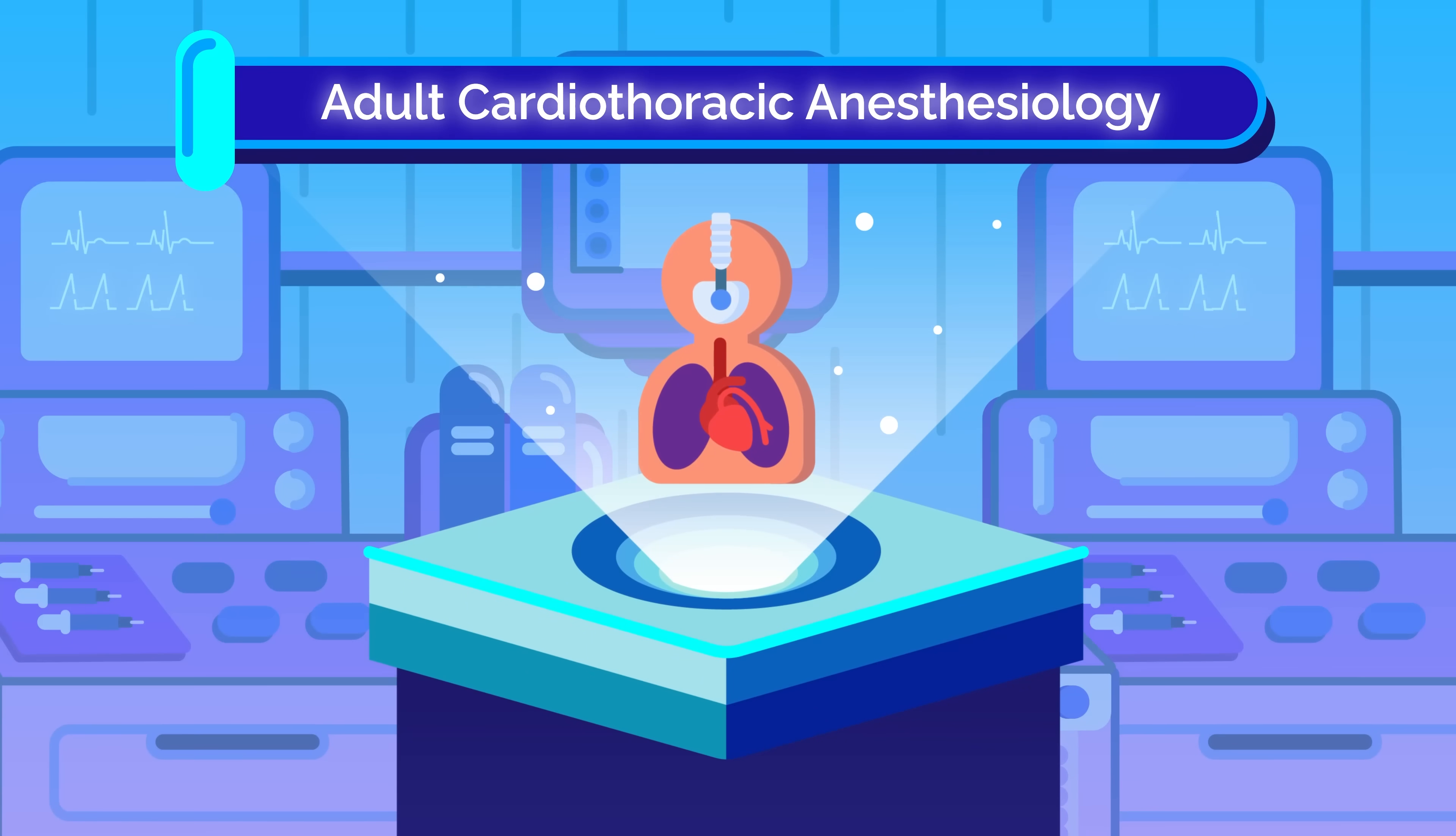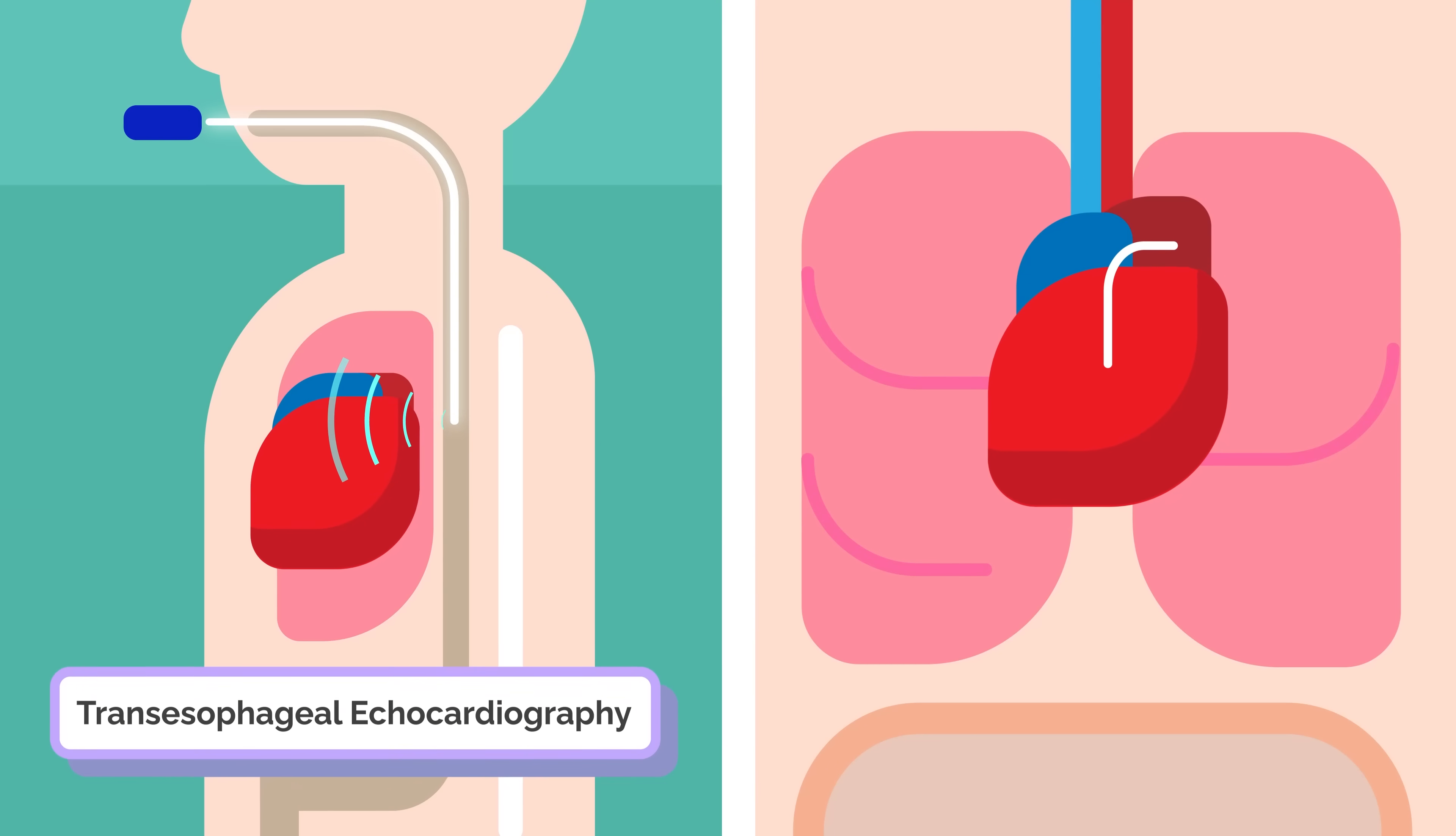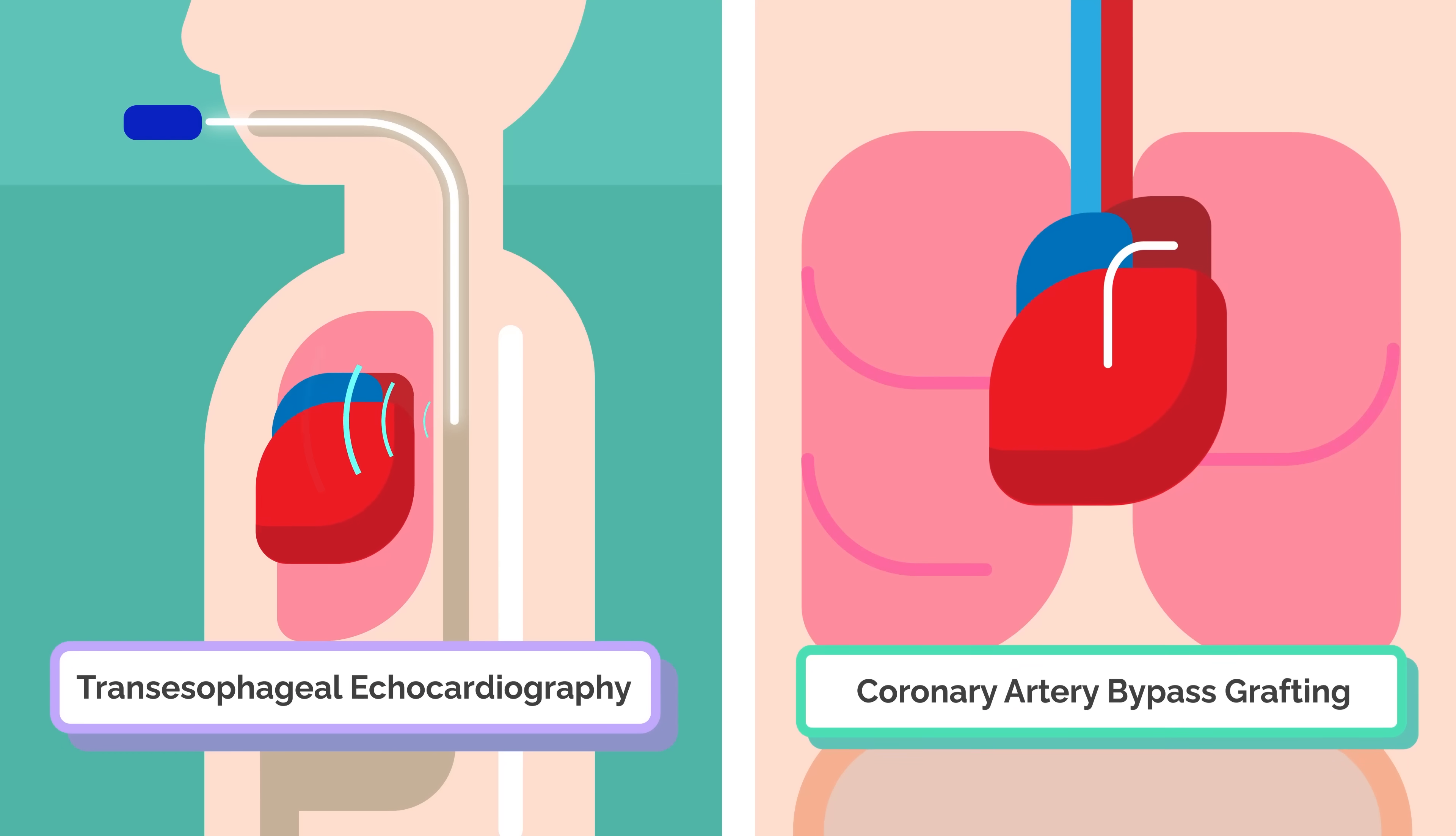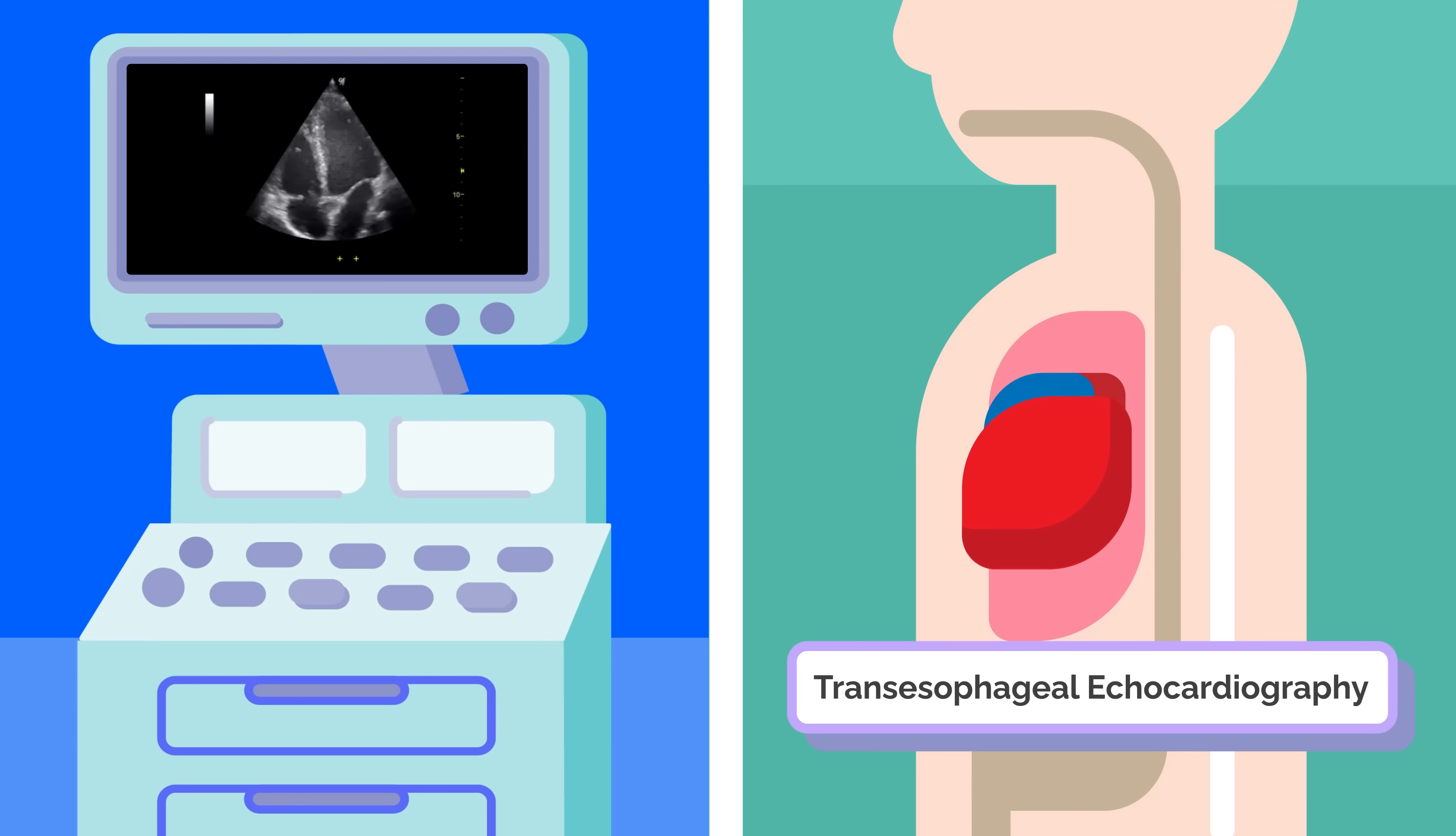First up is adult cardiothoracic anesthesiology. This fellowship puts you at the center of high-stakes cardiac surgeries, which often have the highest risks and rewards. You'll master transesophageal echocardiography and become the go-to expert for unstable patients on cardiac bypass. Transesophageal echocardiography, or TEE, is an ultrasound of the heart.